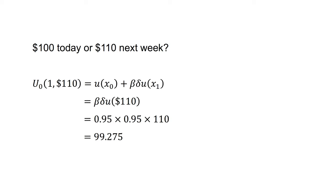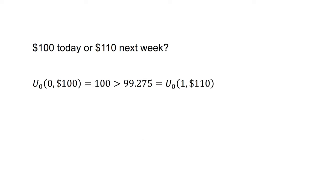The discounted utility of the $110 next week is u(0, 1, 110), which equals beta times delta times the utility of the payment at t equals 1, which equals beta × delta × u(110), which equals 0.95 times 0.95 times 110, which equals 99.275. As u(0, 0, 100) equals 100, which is greater than 99.275, the present biased agent will prefer to receive $100 this week.